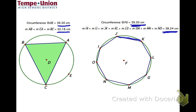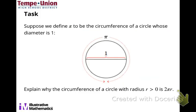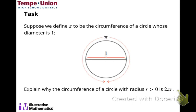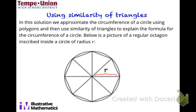With that in mind, let's make an informal argument for the formula C equals 2πr. We start with a given: suppose we have a circle whose circumference is π and whose diameter is one. That means the radius would be one half. We'll use that to explain the formula C equals 2πr.